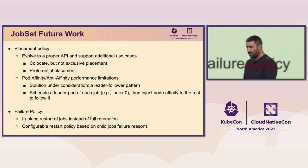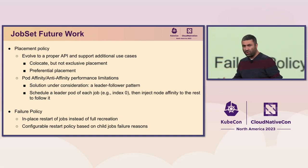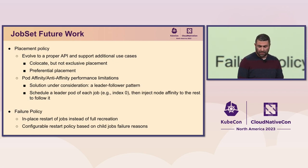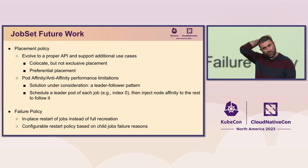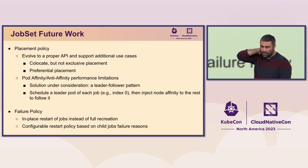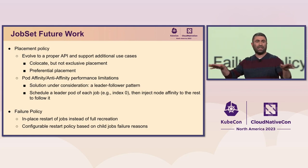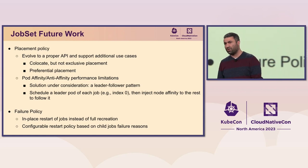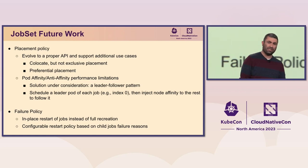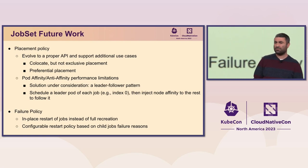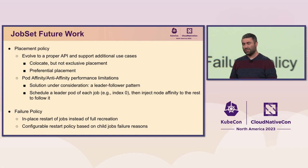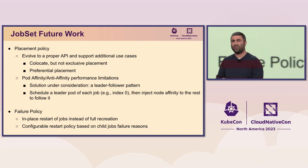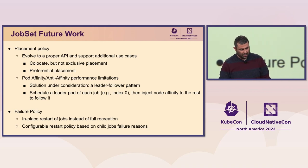For failure policy as well, we have some ideas. Right now we recreate all the jobs when a failure happens, which is a big hammer — it's too expensive. We're thinking about ways to do in-place pod restarts in a reasonable way. The main issue is how we broadcast to all the pods that they should restart. One idea is to have a configmap that all pods mount; they receive a broadcast with a sidecar that makes it more composable — once it receives the restart signal, it does a kill to the main container.